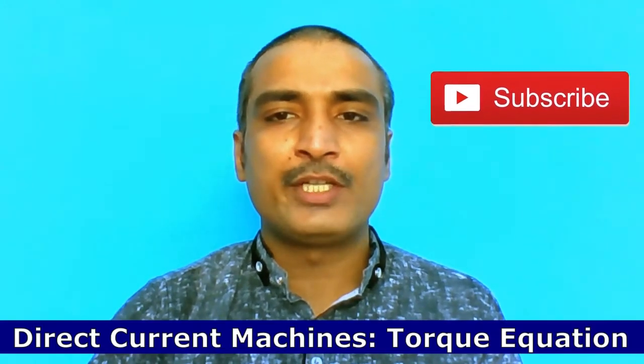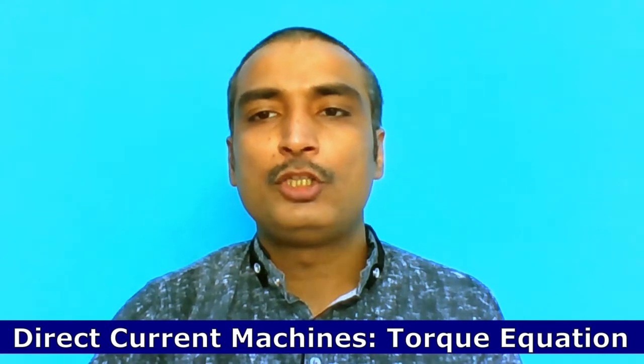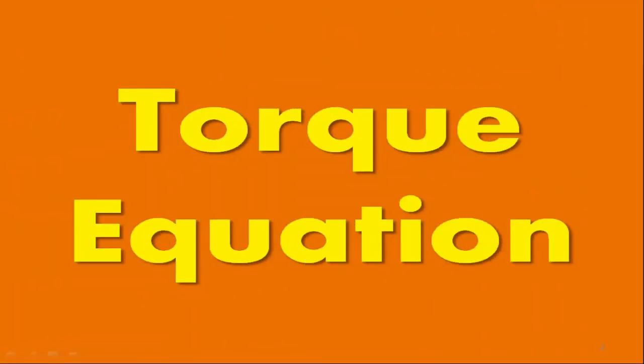The topic of this short lecture is Direct Current Machines Torque Equation. It is well known when current-carrying armature conductors are placed in a magnetic field, a torque is produced which causes the armature conductors to rotate.